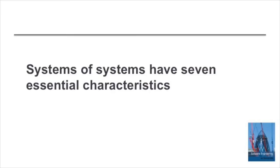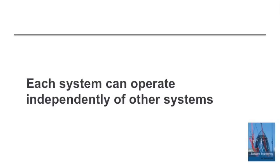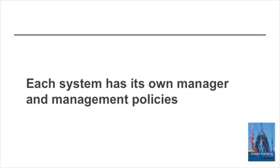I like to think of systems of systems as having seven essential characteristics which distinguish them from systems owned and developed by a single organization. The first of these is the operational independence of the constituent systems — each of the systems within a system of systems has a useful function in its own right. You can use it without the system of systems, so it's not just a component; it's a useful system which can deliver services and has generally been developed separately to deliver those services.